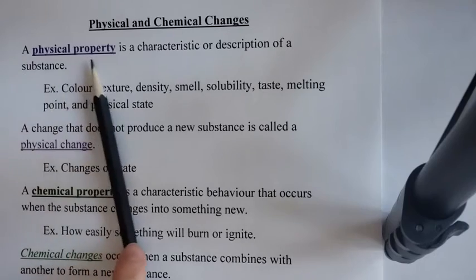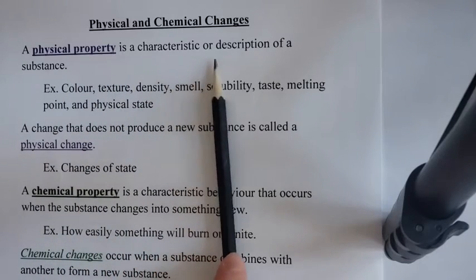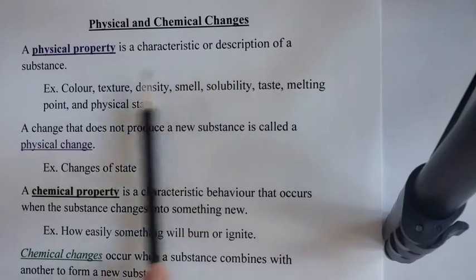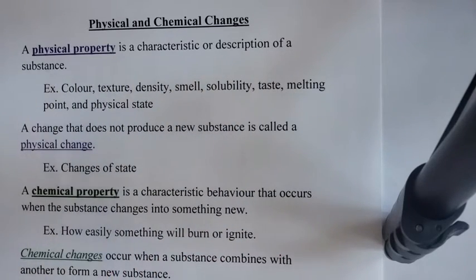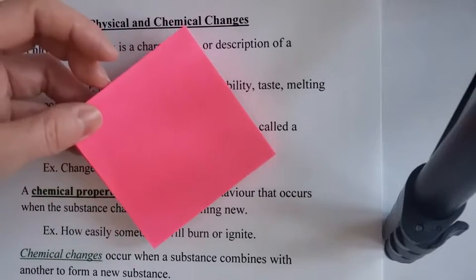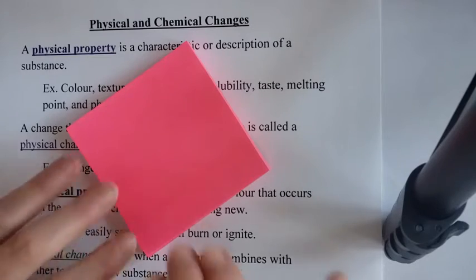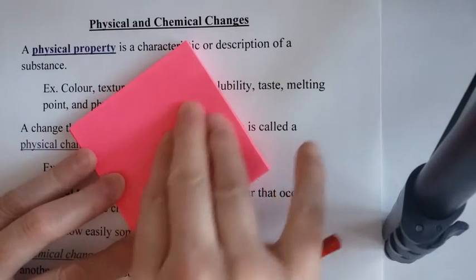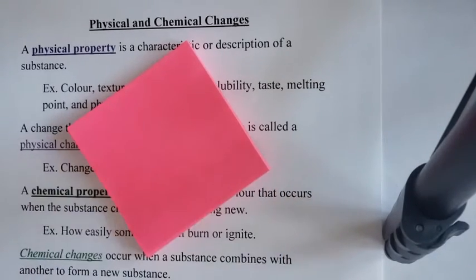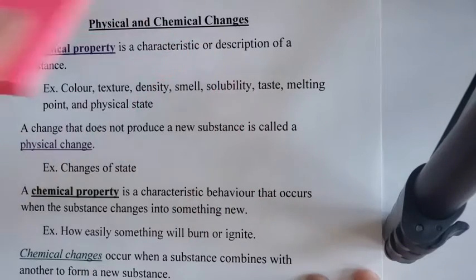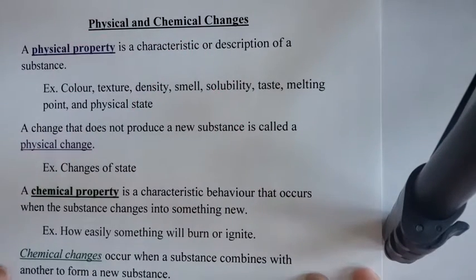A physical property is a characteristic or description of a substance. Usually we use our senses. For instance, if I wanted to describe this object right here, I could say it's pink. Another thing I could say about it is it's smooth. So those are two physical properties of this object, but there are lots of physical properties.